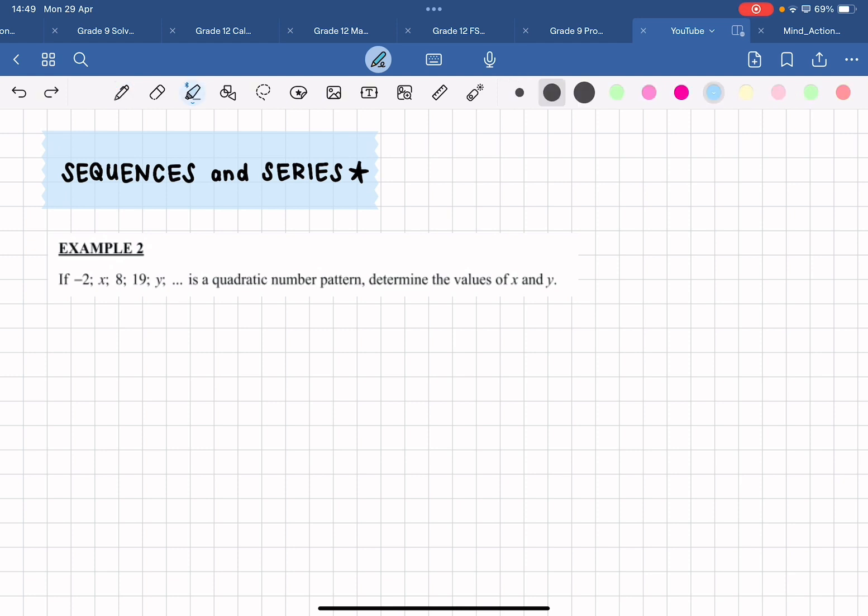Okay, so let's get back into example two. Example two, just like example one, is covering quadratic number patterns. Now we need to remember that a number pattern is classified as quadratic if it has a constant second difference.